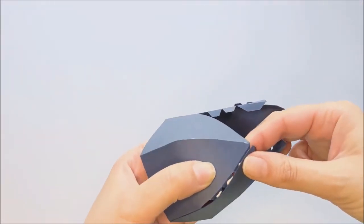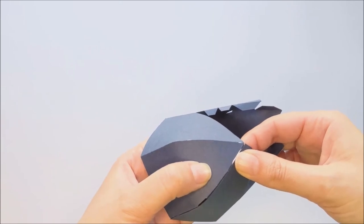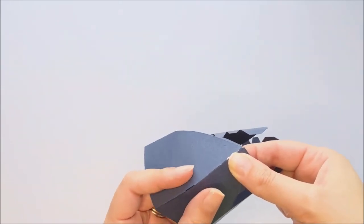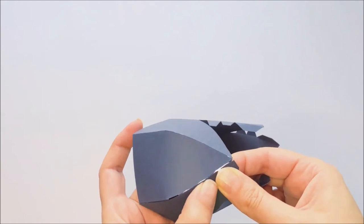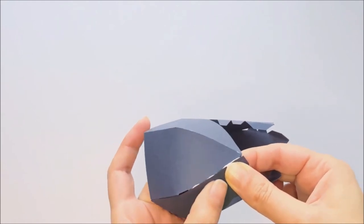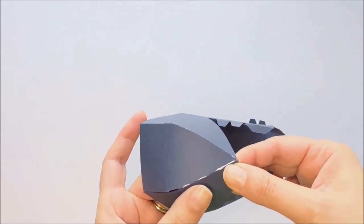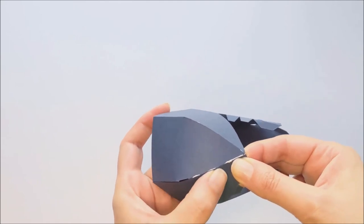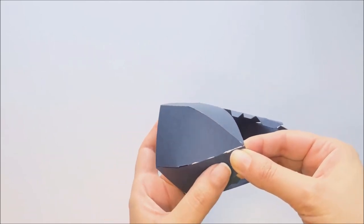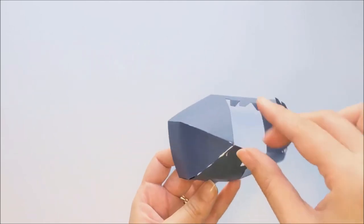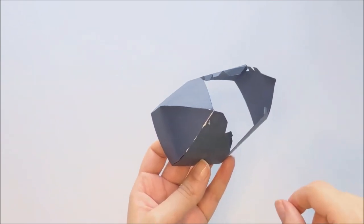So again, I'm just aligning the two sides of those kind of triangular shaped sections and putting pressure on those tabs from the inside until our glue is secure. And I'm just going to repeat that for all six sides of the crown.